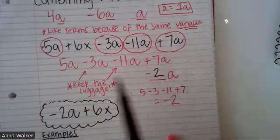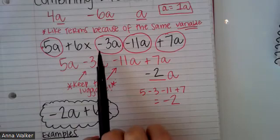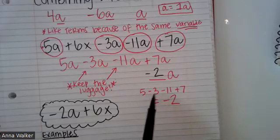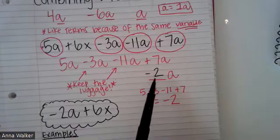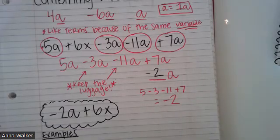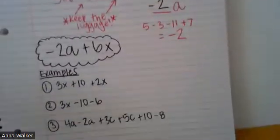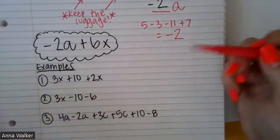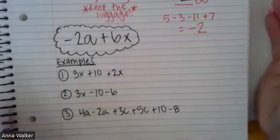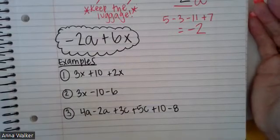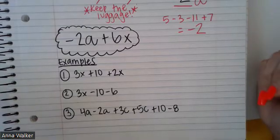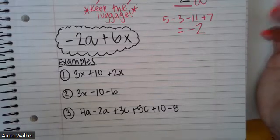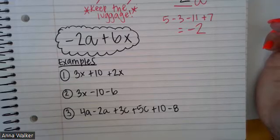When we combine like terms, we're finding our like terms and then we are keeping the luggage or the sign of whatever the term is, and we're just combining our coefficients by adding or subtracting depending on what the signs are, and replacing it as the coefficient of the like term. Let's look at some other examples so you can see a variety of things. If you want to take a moment to pause and try them on your own first, you can.